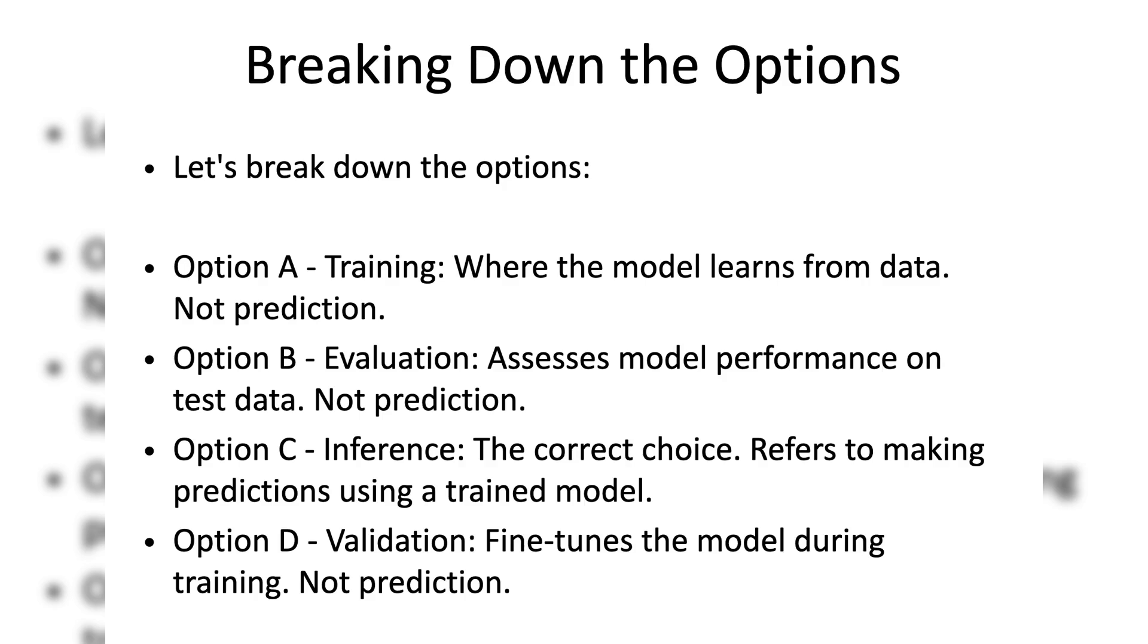Option A: Training. Training is the process where the model learns from a given dataset by adjusting its parameters. This is where the model learns the relationships between the input data and the output labels. However, training is not the process of making predictions; rather, it is the phase where the model is being prepared to make predictions.